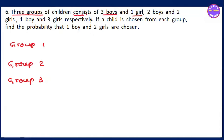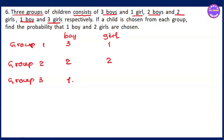Group one, group two, group three. Group one has three girls. If a child is chosen from each group — group one, group two, group three — find the probability that there is one boy and two girls.